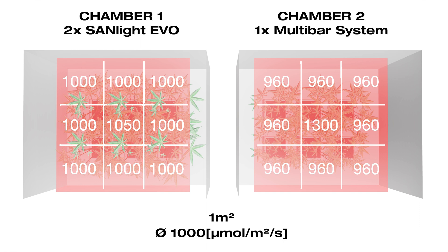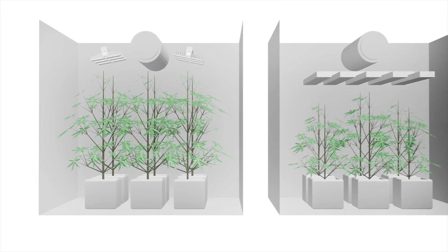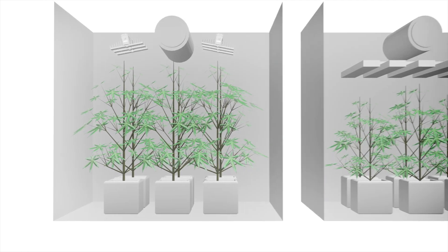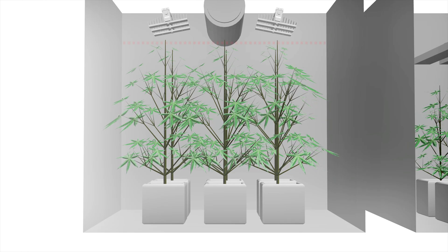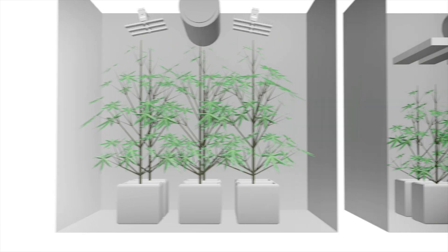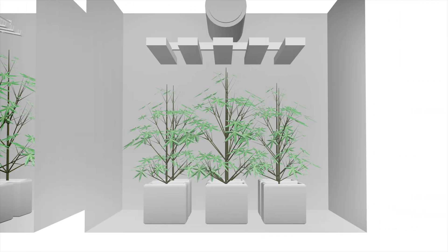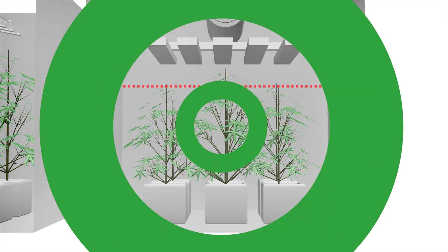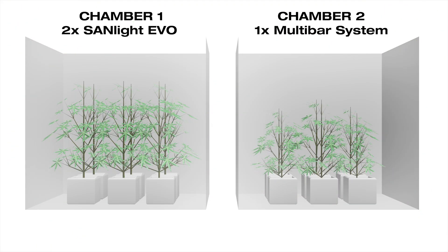The difference is that one chamber has a high uniformity and the other doesn't. Due to equal intensities in the uniform chamber, the plants tend to grow more equally, while in the other chamber the plant in the center grows taller than the rest. A uniform light distribution leads to a more stable nutrient and water requirement of the plants.